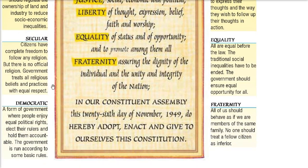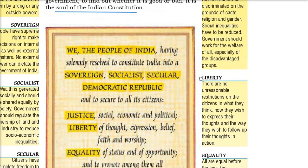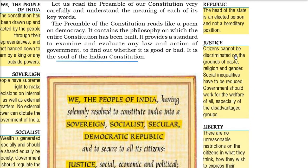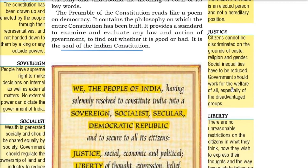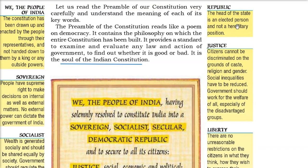Democratic Republic: Democratic means the form of government where people enjoy equal political rights, elect their rulers, and hold them accountable. The rulers are answerable to the citizens. Justice means citizens cannot be discriminated on the grounds of caste, creed, religion or gender. Social inequalities have to be reduced, and the government should work for the welfare of all, especially the disadvantaged groups. Republic means the head of state is an elected person, not hereditary, elected by the citizens of the country.